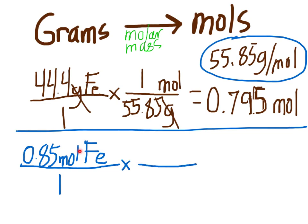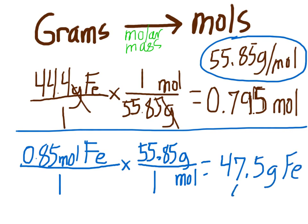So moles on the bottom, grams at the top. So at one mole of iron, there are 55.85 grams of iron. So using dimensional analysis, it's going to come up with 47.5 grams of iron, or 48 grams of iron.